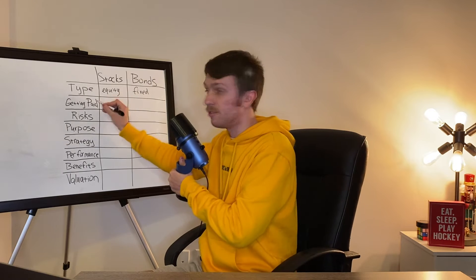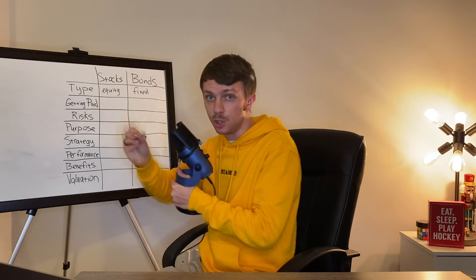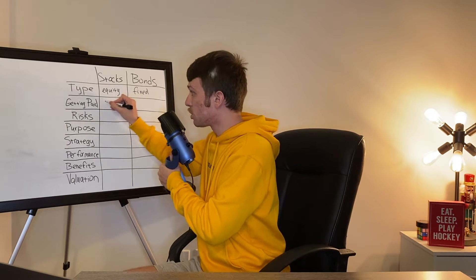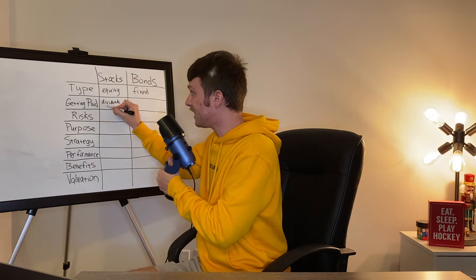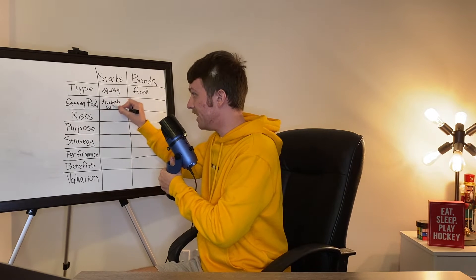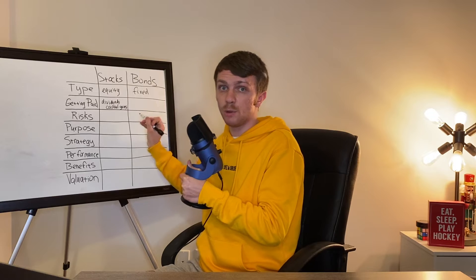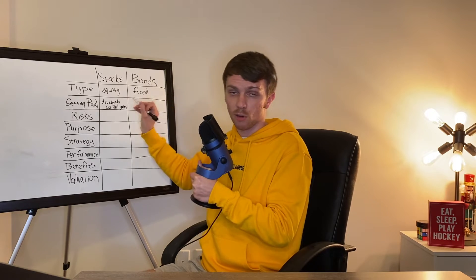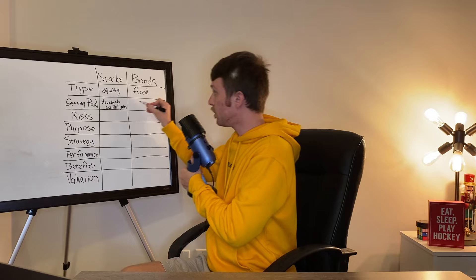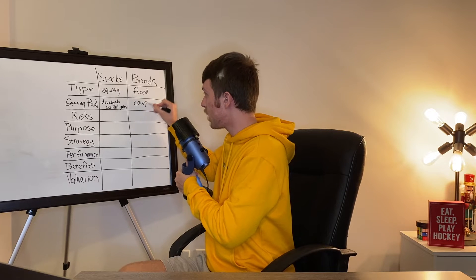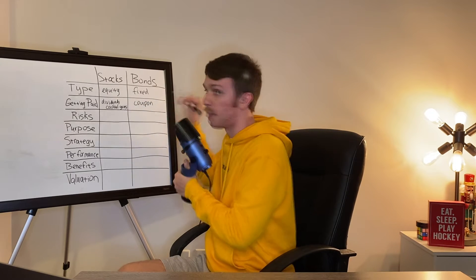Next is the way these investments bring you money. You can profit from investing in stocks by receiving dividends or realizing capital gains. Capital gain is simply when you sell a stock for a higher price than you bought it for. In the case of bonds, you receive coupon payments, which are distributed monthly, quarterly, or annually.